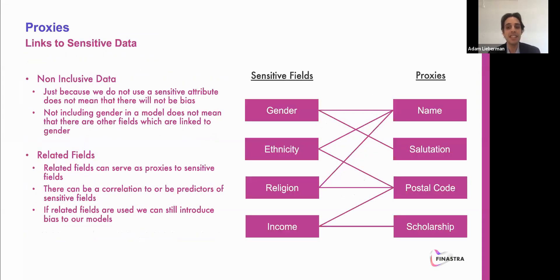Just because we leave sensitive data out of our models does not mean that models do not have links to sensitive data. Related fields can serve as proxies that can be links to this sensitive data. For example, we know gender, ethnicity, and religion are not to be used in a lending model designed to predict mortgage approval. However, if we use postal code or a name in the model, we could potentially derive things like ethnicity from the postal code and gender from a name. These can serve as links to the sensitive data we originally left out, and this can introduce bias.